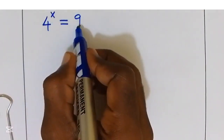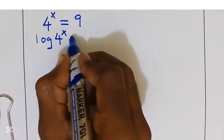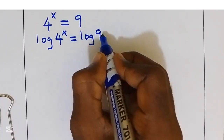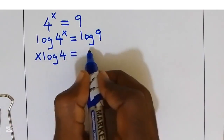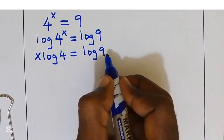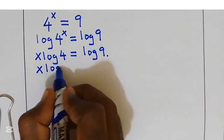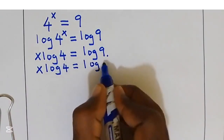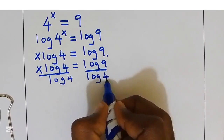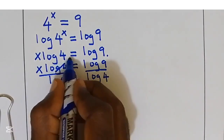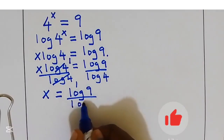Since 4 to the power of x equals 9, I'm going to apply log to both sides. Log of 4 to the power of x is equal to log 9. I'll bring x in front of log, so x times log 4 is equal to log 9. Dividing both sides by log 4, we get x is equal to log 9 over log 4.